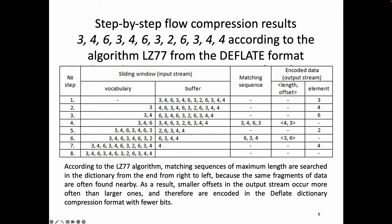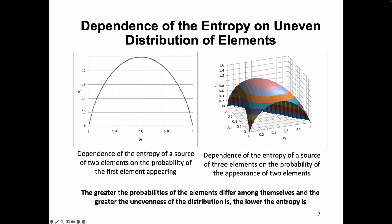According to the LZ77 algorithm, matching sequences of maximum length are searched in the dictionary from the end, from right to left, because the same fragments of the data are often found nearby. As a result, smaller offsets in the output stream occur more often than larger ones, and therefore are encoded in the deflate dictionary compression format with fewer bits. The greater the probabilities of the elements differ among themselves, and the greater the unevenness of the distribution is, the lower the entropy is.